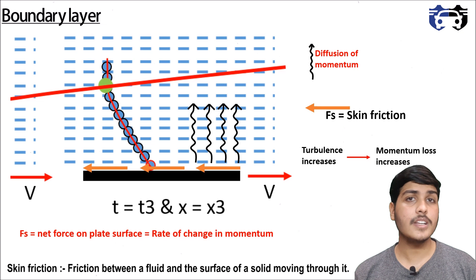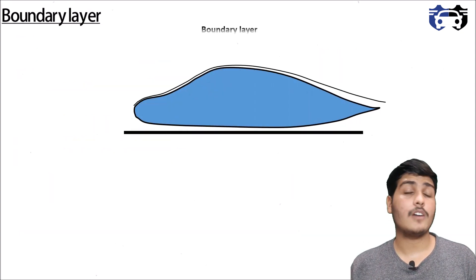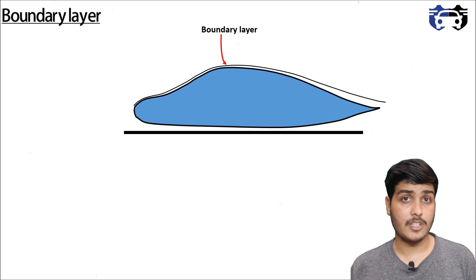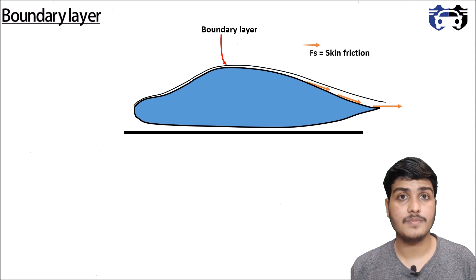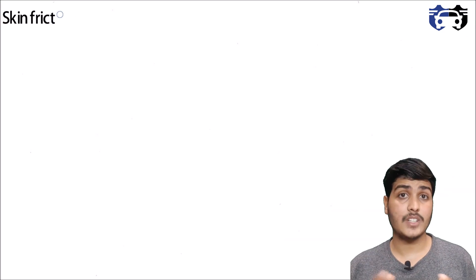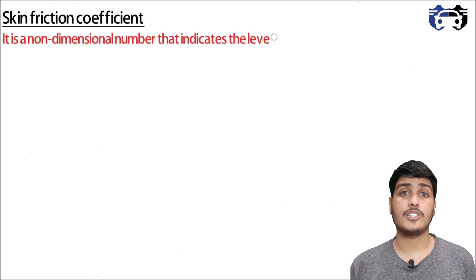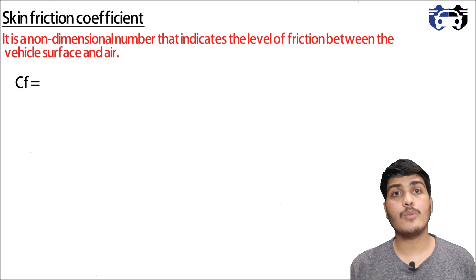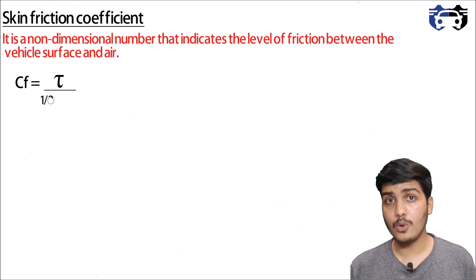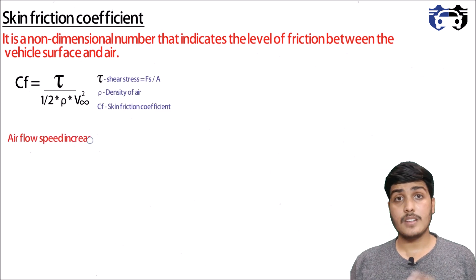This applies to vehicle surfaces as well. At the back of the car, where we get a thicker boundary layer with turbulent flow, momentum loss increases, raising the value of skin friction or vehicle drag. The skin friction is characterized by the skin friction coefficient, a non-dimensional number indicating friction between the vehicle surface and the air, given by: Cf = τ / (½ρV∞²).